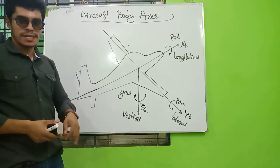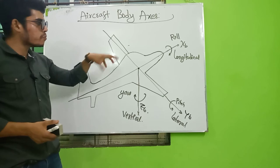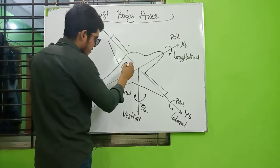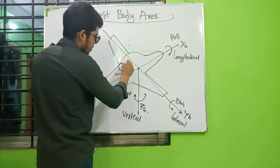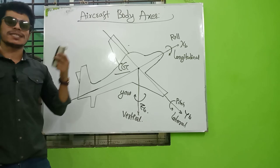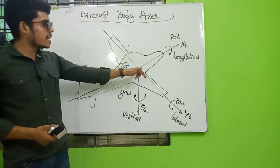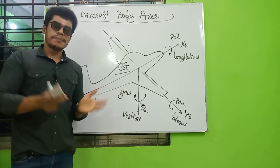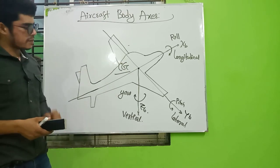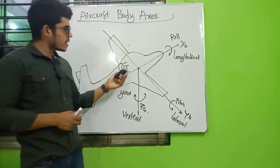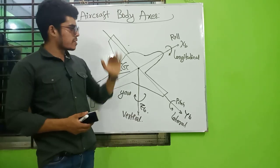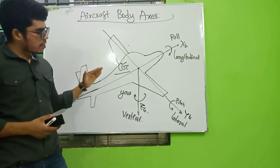This is the center of gravity. The center of gravity means a specific point of the aircraft. In the last class, we have seen CG — the center of gravity — and what it does. The aircraft has a center of gravity, and the center of gravity is located at that same point.